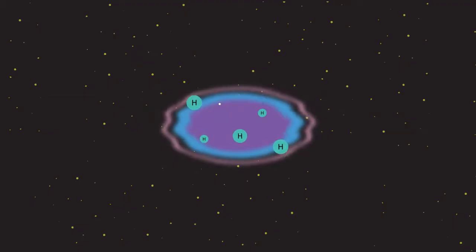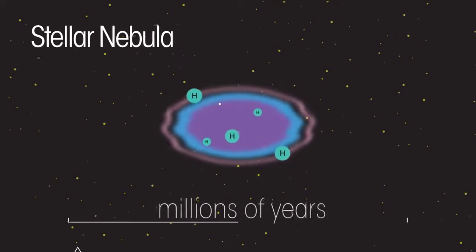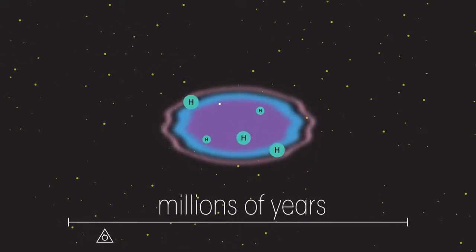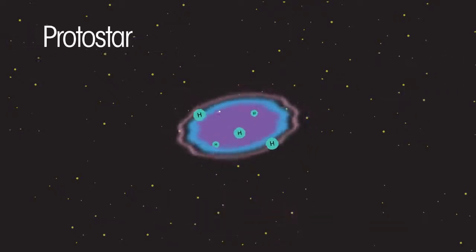All stars initially form from a cloud of dust and hydrogen gas. This cloud is called a stellar nebula. Gravity over millions of years causes the dust and gas to spiral together. The particles move faster and eventually reach temperatures of millions of degrees to form a protostar.